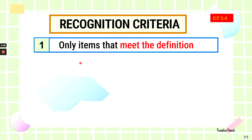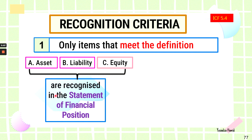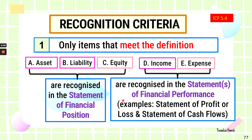Let us look at the recognition criteria for items in the financial statement. According to the framework, you can only recognize an asset, liabilities, equity, income, and expense if the item meets the definition. We have already discussed the definition of the elements of financial statements earlier. Asset, liability, and equity will be recognized in the statement of financial position only if the definition of each element has been met. If the definition is not met, there is no recognition. For income and expense, these will be recognized in the statement of financial performance, such as the statement of profit or loss and the statement of cash flows.